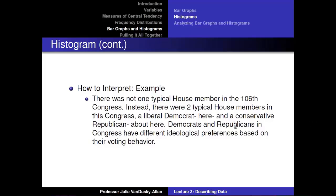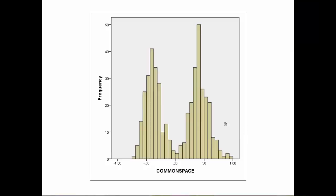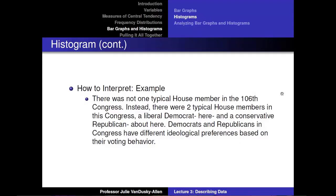Here is an example of a histogram for common space scores from the House in the 106th Congress, measuring ideological leanings on a −1 to 1 scale. The bars represent ranges of values, making the graph more informative and visually appealing. We could interpret this histogram as: 'There was not one typical House member in the 106th Congress. Instead, there were two — a liberal Democrat and a conservative Republican — reflecting the different ideological preferences of Democrats and Republicans based on their voting behavior.'